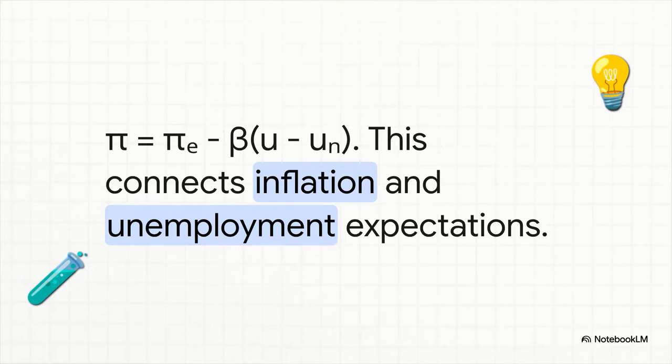Don't get scared by the formula here. It might look a little intense, but it's actually pretty straightforward. All it's saying is that the inflation we see today is really based on two big things. One, what we thought it was going to be, and two, how far off we are from that natural unemployment rate. And see that little Greek letter, beta? That's our magic number. It's the sensitivity factor, telling us just how strong this trade-off really is.